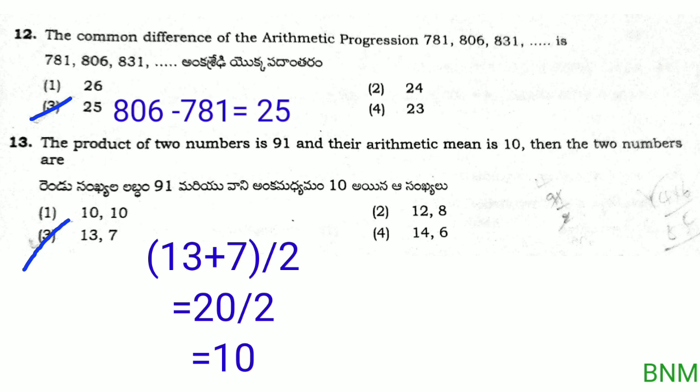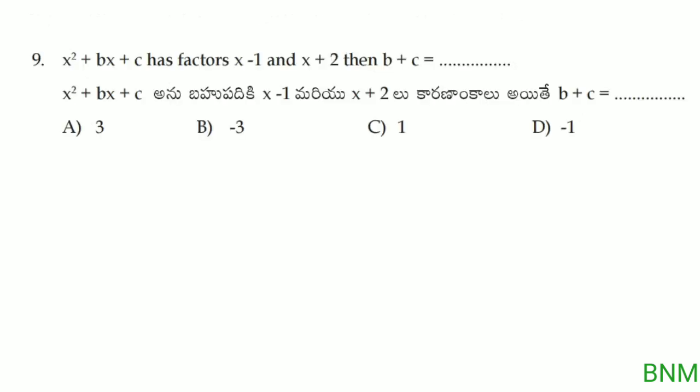The arithmetic mean of 13 and 7 is (13 plus 7) by 2, which is 20 by 2, equals 10. And 13 times 7 equals 91. So the two numbers are 13 and 7. That is the right answer.